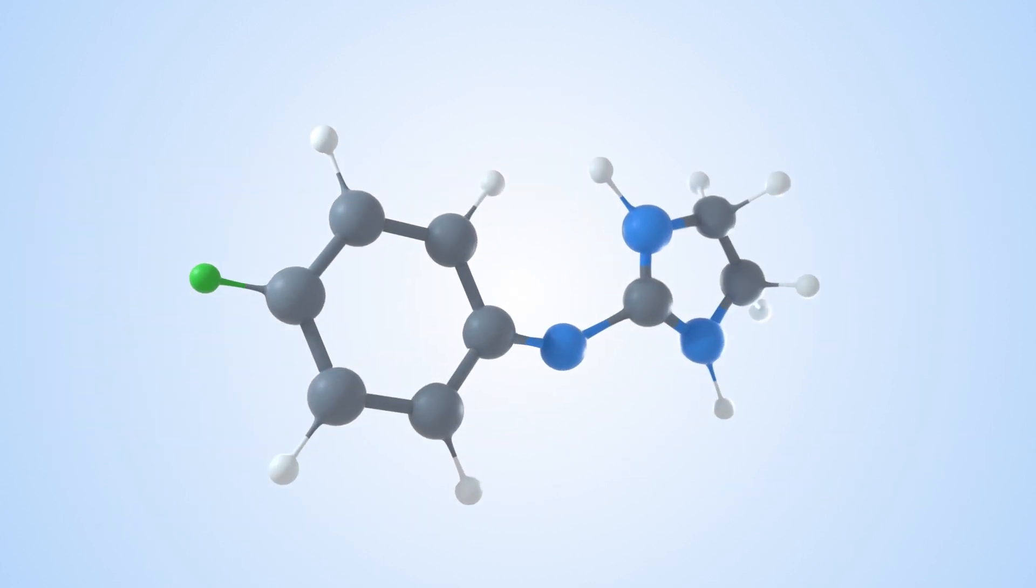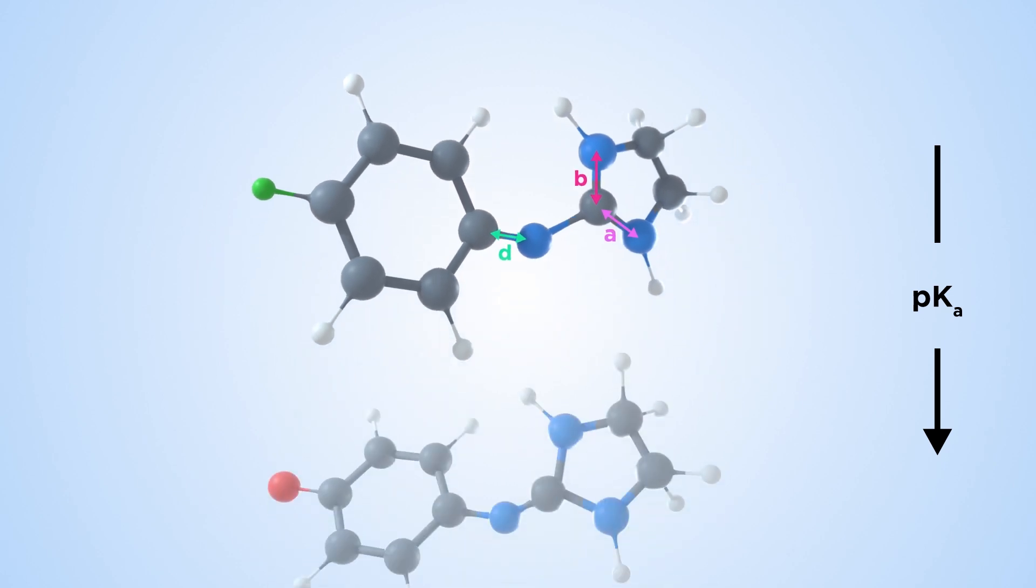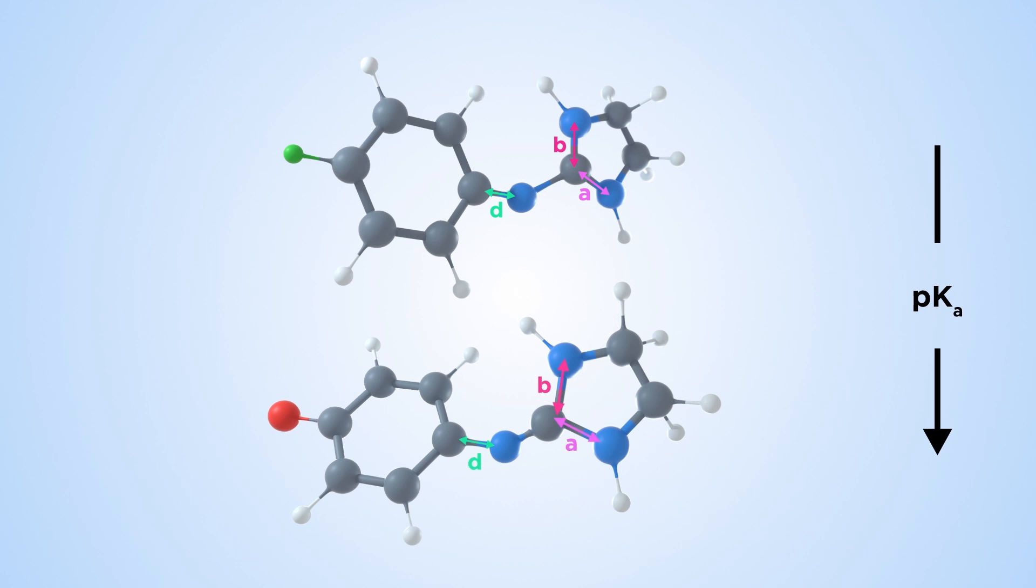Across a series of compounds, some bond lengths get shorter as others get longer, as pKa decreases and the compound becomes more acidic. Here, this molecule is more acidic than the one below it.